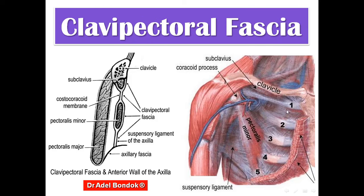Then the clavipectoral fascia. It is located between the subclavius and pectoralis minor. Superiorly, it splits into two layers which surround the subclavius. Inferiorly, it splits to surround the pectoralis minor, and then forms the suspensory ligament of the axilla, which is attached to the axillary fascia. It is also called the costocoracoid membrane.